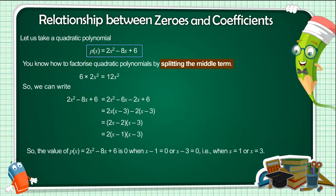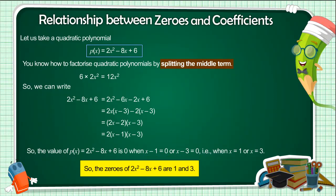The value of px equals 2x² minus 8x plus 6 is 0 when x minus 1 equals 0, or x minus 3 equals 0, that is when x equals 1 or x equals 3. So the zeros of 2x² minus 8x plus 6 are 1 and 3.